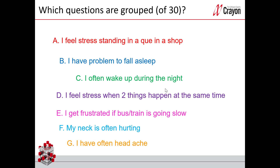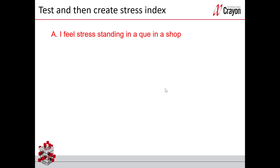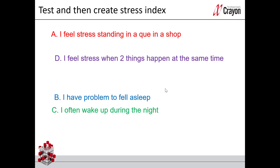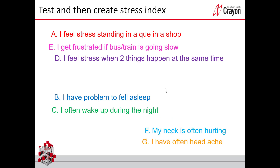What you can find out is, through factor analysis for example, which questions are grouped together. When you know these groups, you can test them and then create an index — in my example, a stress index. That could be a good score for measuring something that is hard to measure, like stress.